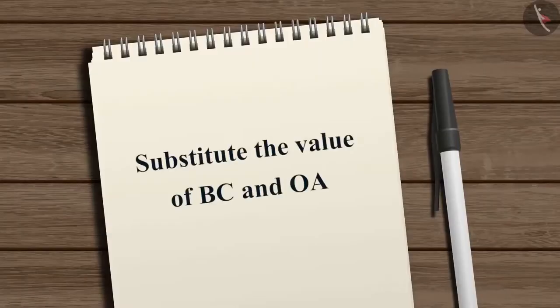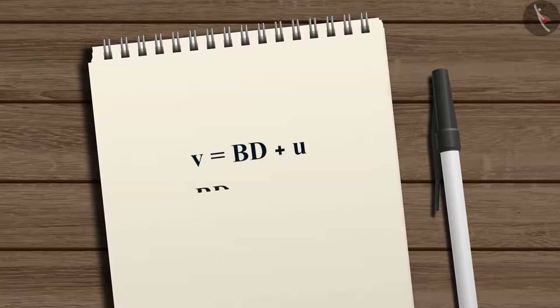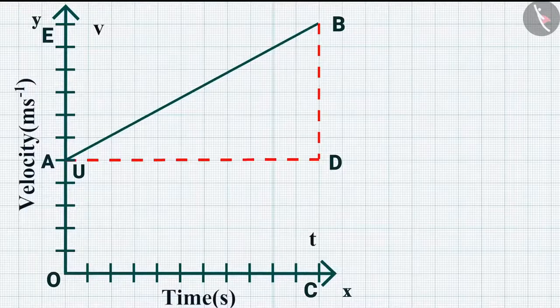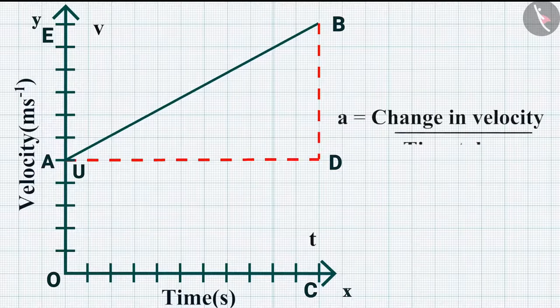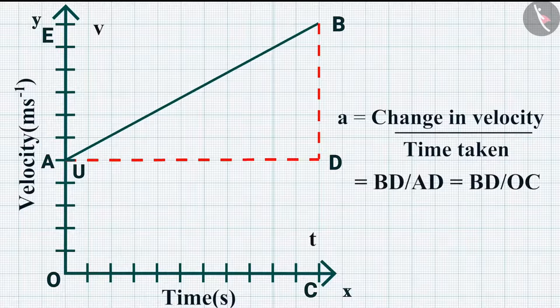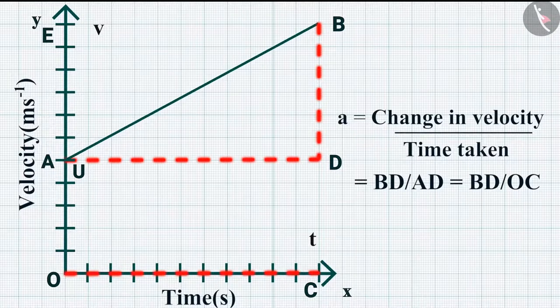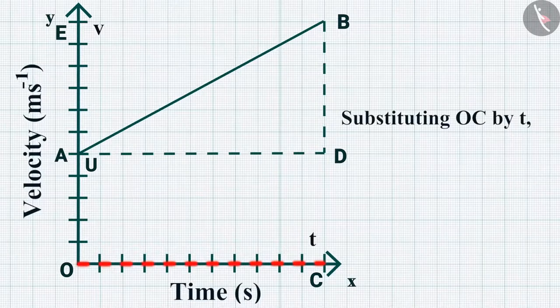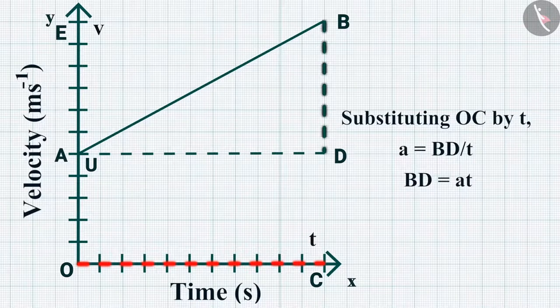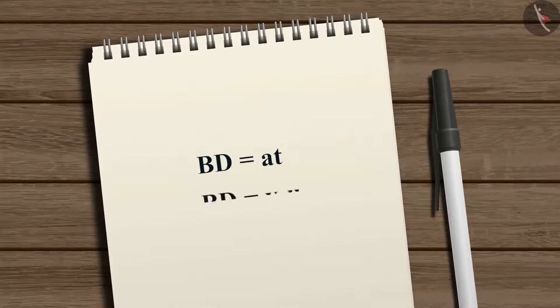Substituting: V equals BD plus U, so BD equals V minus U. From the graph, acceleration A equals change in velocity divided by time taken, which equals BD divided by AD, equals BD divided by OC. Substituting OC by T: A equals BD divided by T, so BD equals AT. Substituting BD equals AT into BD equals V minus U, we get V equals U plus AT.